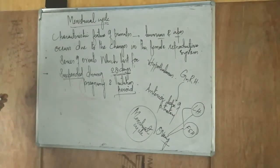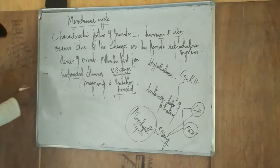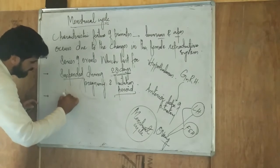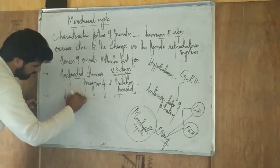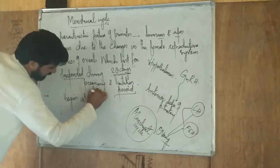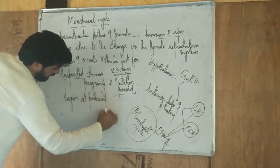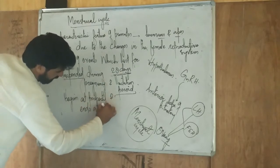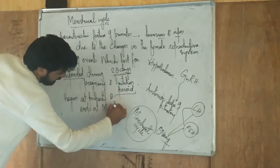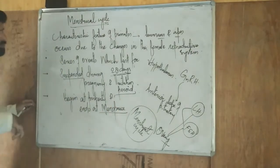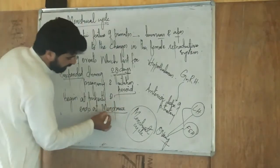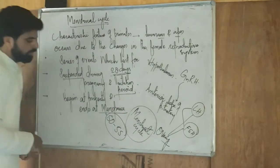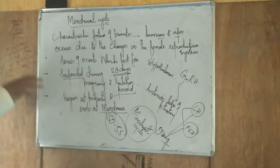The first menstrual cycle begins at puberty and ends at menopause. It completely stops at menopause. You should keep in mind that the age of menopause is 50 to 55 years — that is the age where the menstrual cycle completely stops.